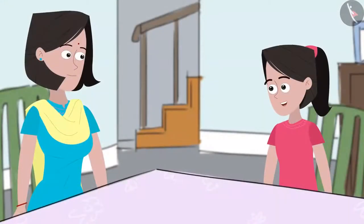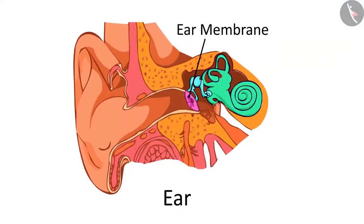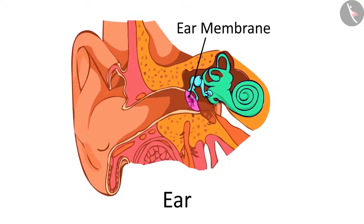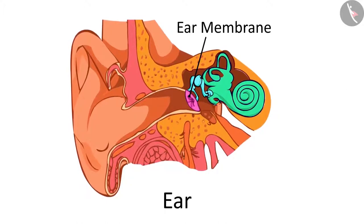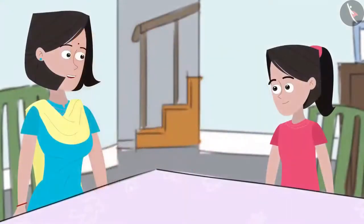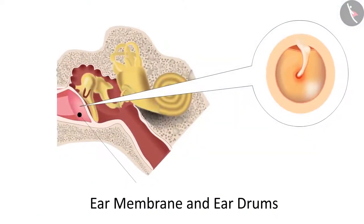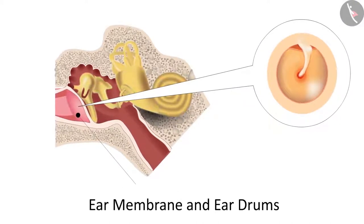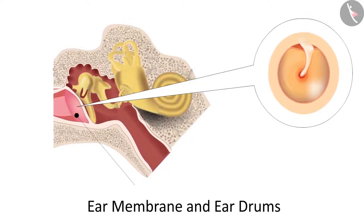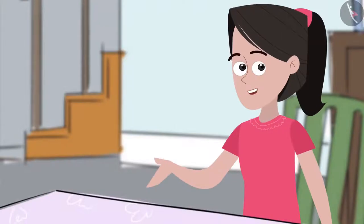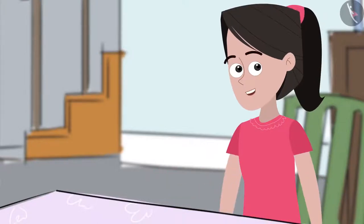Mummy, similar to the structure in the throat for producing sound, is there a structure in our ears that helps us hear? Yes, absolutely. Inside our ears, there is a membrane that helps us hear. Friends, I am just wondering if hearing sounds also has some connection with vibrations. Do you think there are vibrations in our ears because of which we can hear sounds? Let us refer to our textbooks and find an answer to this.